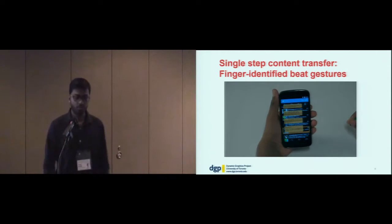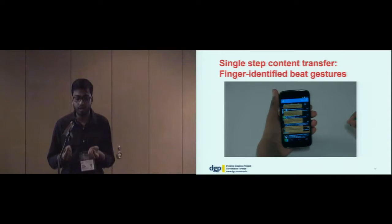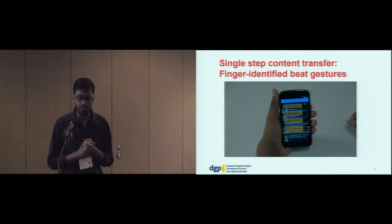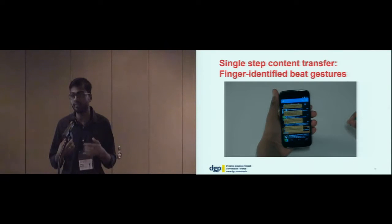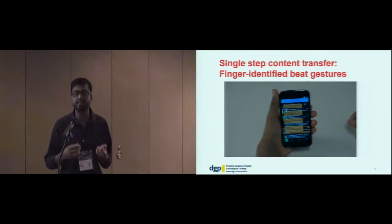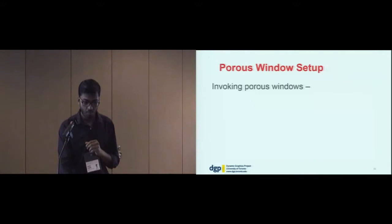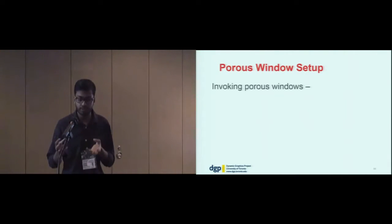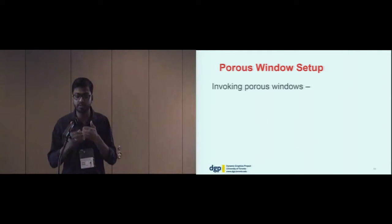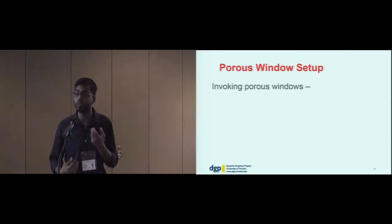Now we've seen how porous interfaces work with two overlaid windows and how they reduce those 12 steps to zero or one steps. But how does the user get these two windows open in the first place? How do porous interfaces handle window setup? To address window setup, we focus on the scenarios where a user might need to invoke porous windows.